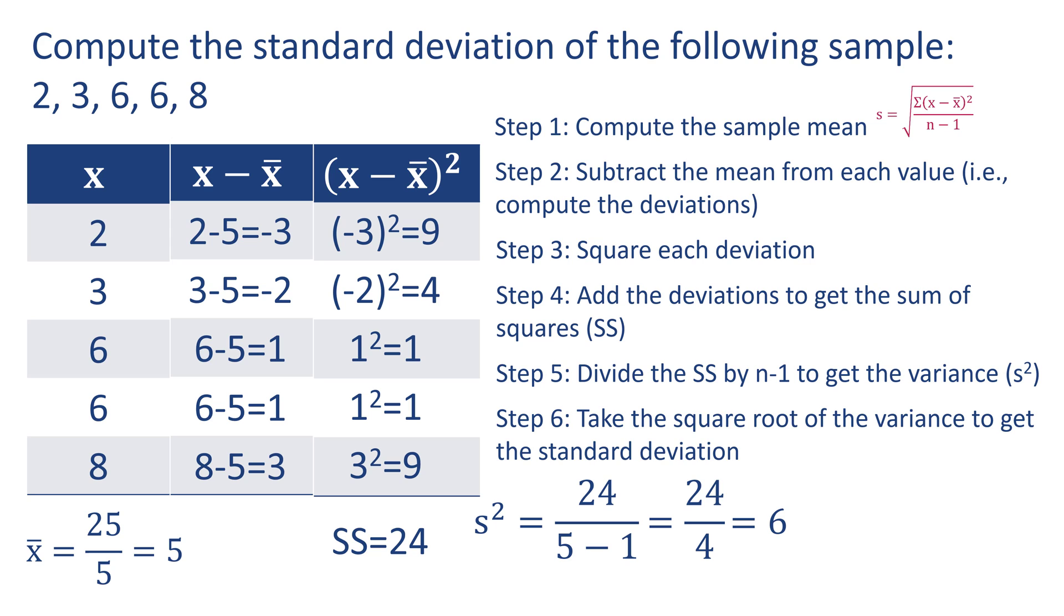Step 6: take the square root of the variance to get the standard deviation. This is the last step. Our variance was 6. The square root of 6 equals 2.449. This is our sample standard deviation.